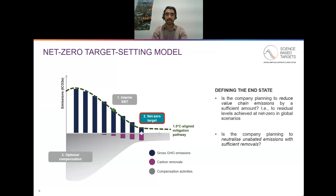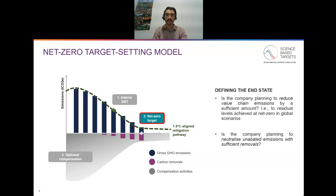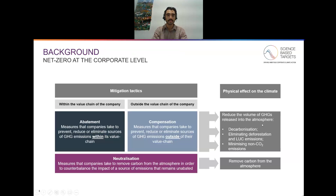To start with, I want to zoom in on the net zero target. When assessing a net zero target and whether it meets our criteria, it can be useful to ask the following questions. Is the company planning to reduce value chain emissions by a sufficient amount — in other words, to residual levels achieved net zero in global scenarios? The second question, which is more the focus of this video, is: is the company planning to neutralize unabated emissions with sufficient removals?